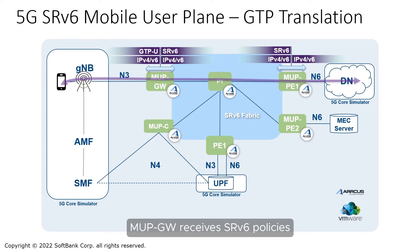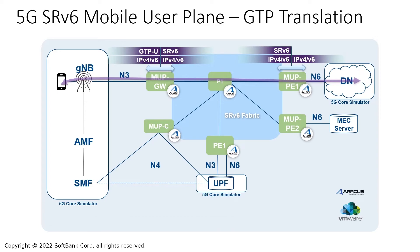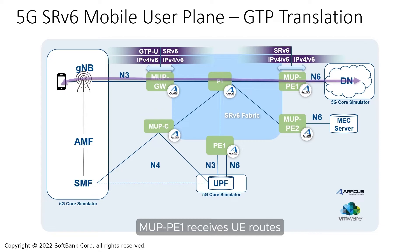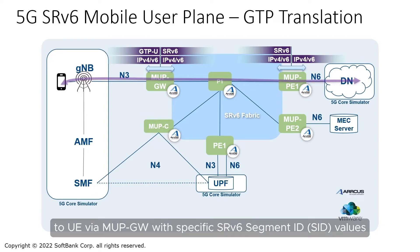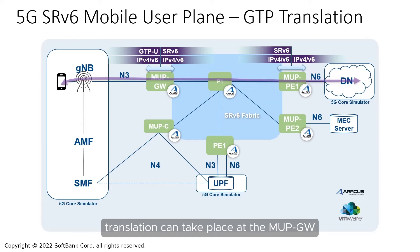The MUP gateway receives SRV6 policies, defining which GTPU tunnels terminate and forward inner packets over SRV6. MUP PE1 receives UE routes, which tell it how to send traffic to the UE via the MUP gateway with specific SRV6 segment ID values, such that stateless translation can take place at the MUP gateway.